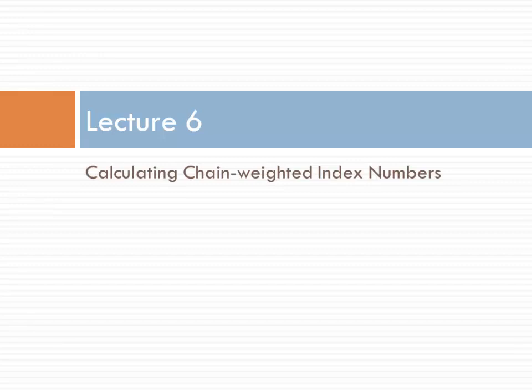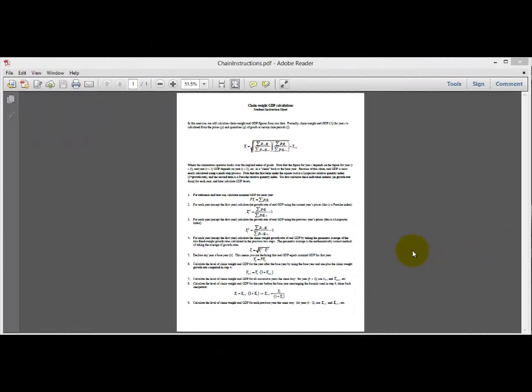I'm going to take some time now to show you how to calculate a chain-weighted index number, and then you're going to calculate your own. We're going to use a chain-weighted index called Fisher's Ideal Index Number. Fisher's Ideal is not the index number that the BLS and BEA use to calculate real GDP, the GDP deflator, or the PCE, but it's a member of a class called superlative index numbers.